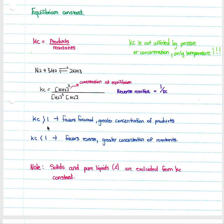If Kc is greater than 1, the reaction favors the forward reaction and there is a greater concentration of products. If Kc is less than 1, the reaction favors the reverse reaction and there is a greater concentration of reactants. Note that solids and pure liquids are excluded from your equilibrium constant — if you have a solid or pure liquid in your products or reactants, you do not include it in the Kc expression.